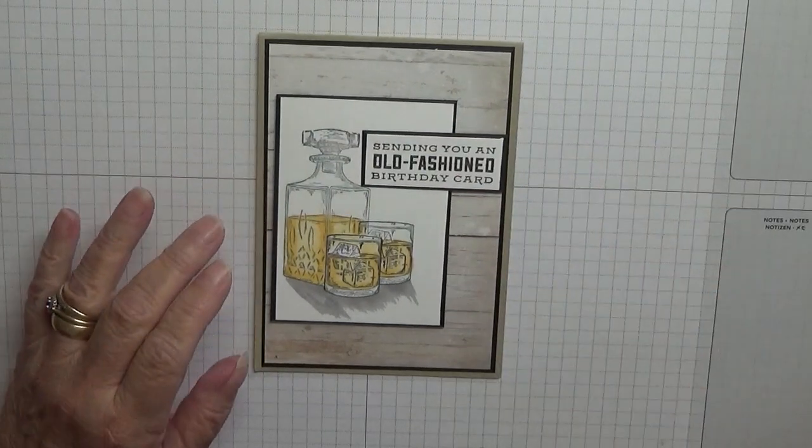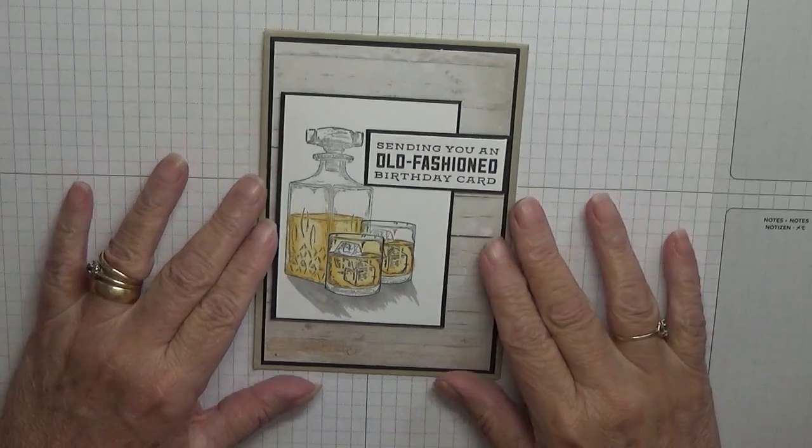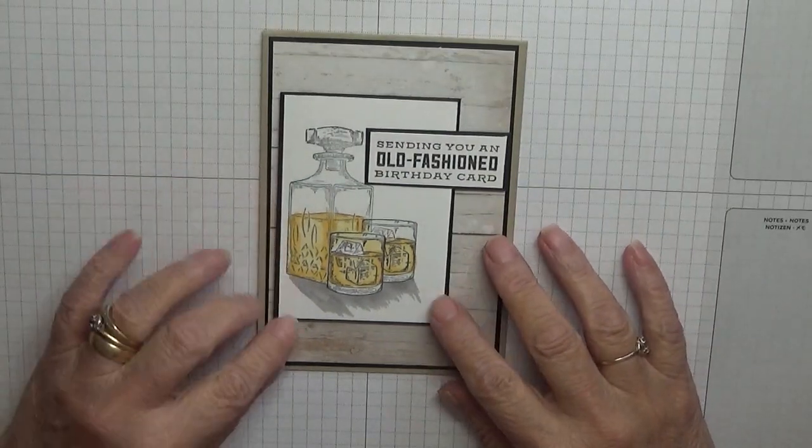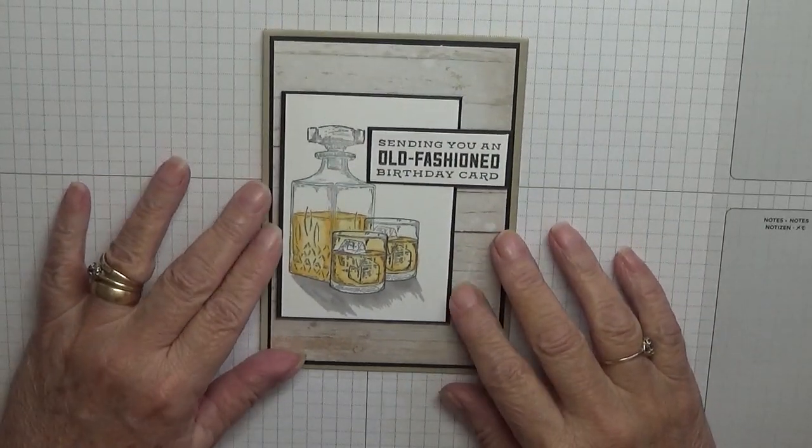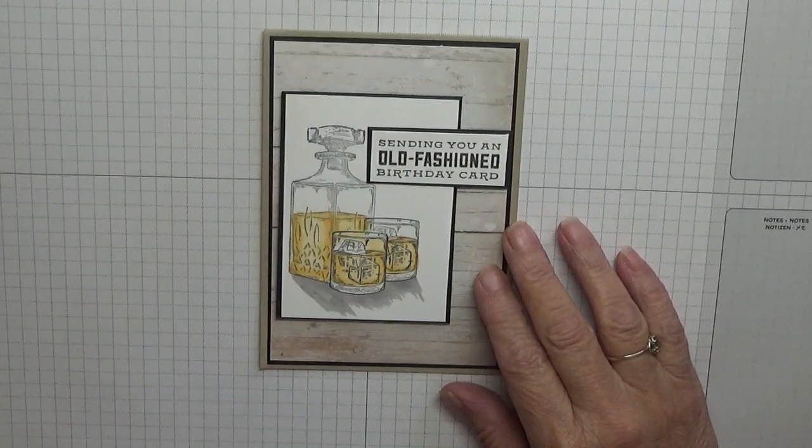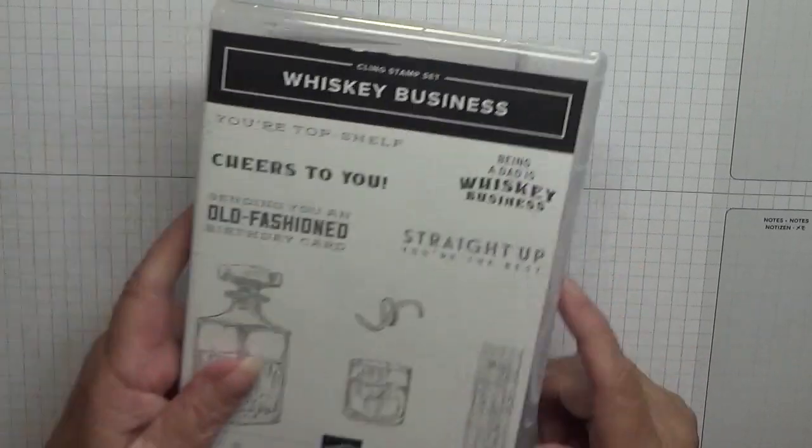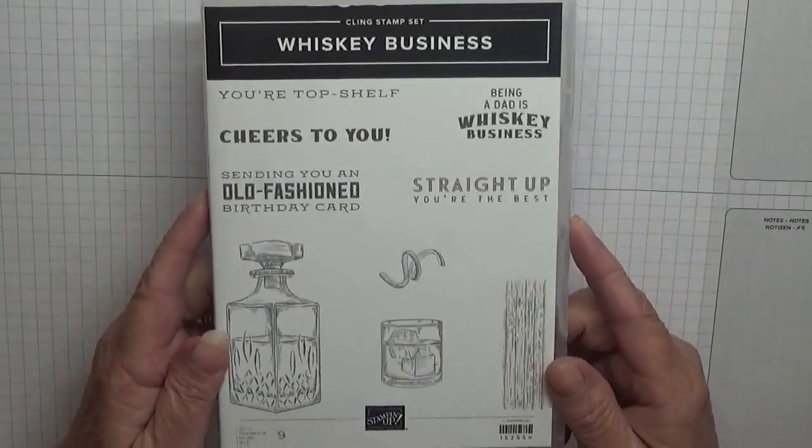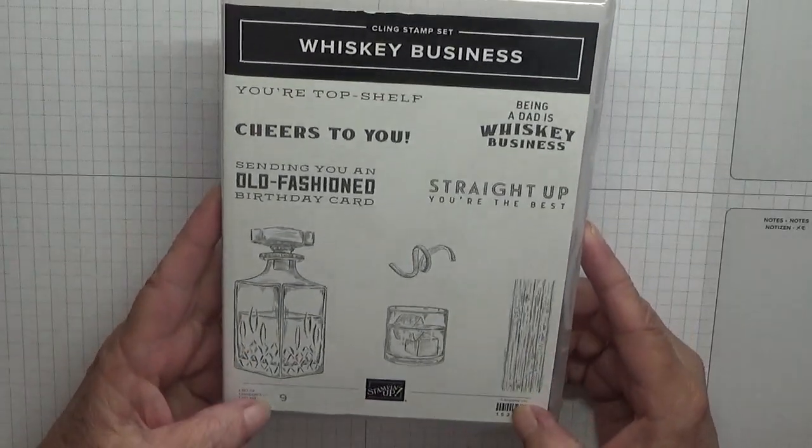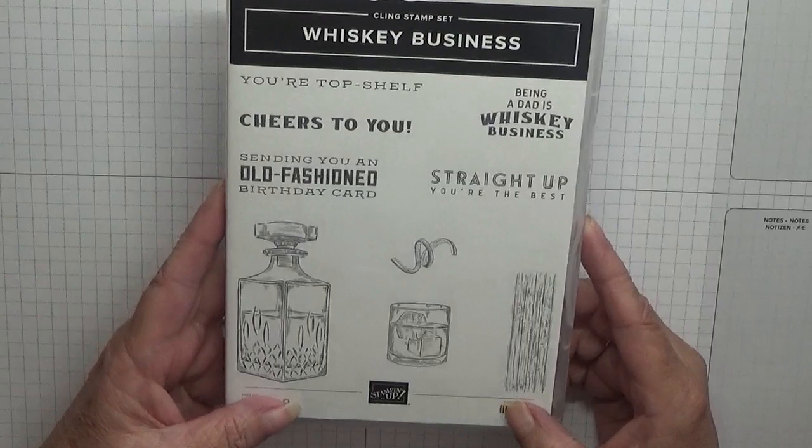Hi everybody, Georgie Burns here. Today I'd like to show you how I made this card. This is a new stamp set from the new catalog and it is called Whiskey Business. I think it's quite nice for a gentleman.